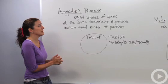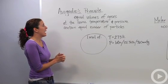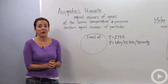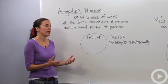Here's Avogadro's principle, and it states that equal volumes of gas at the same temperature and pressure contain equal number of particles. What does that mean? How can we break that down?